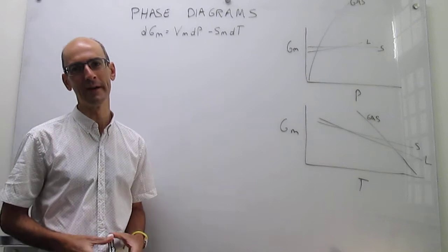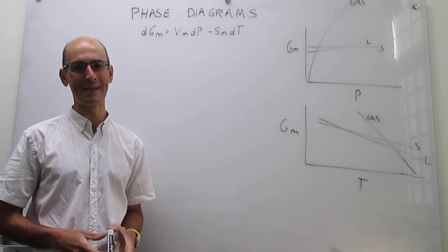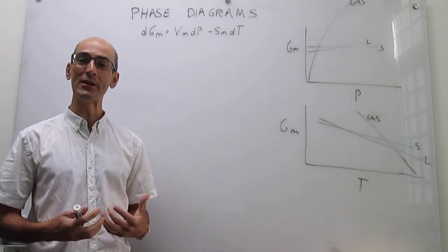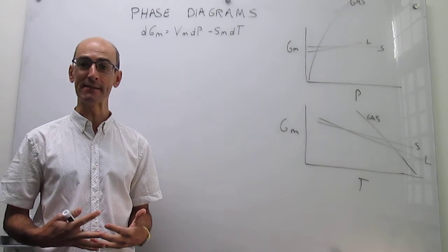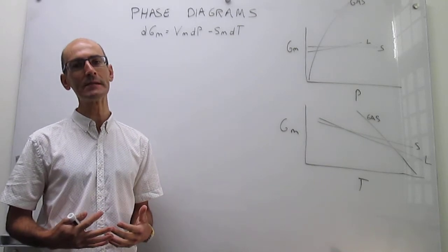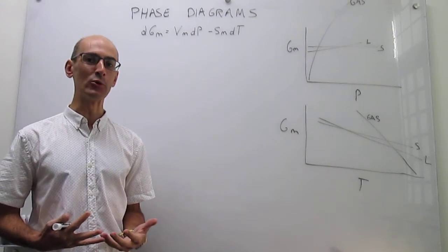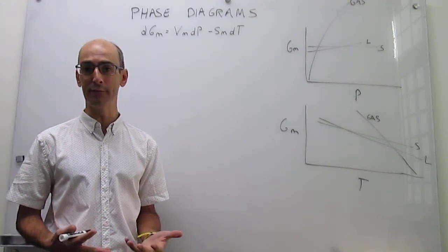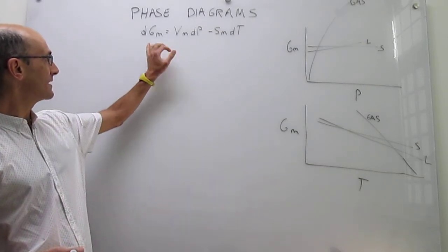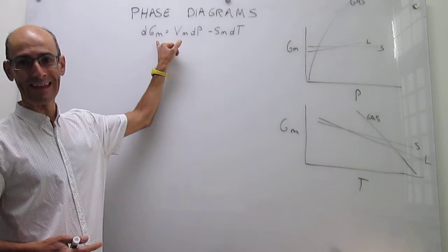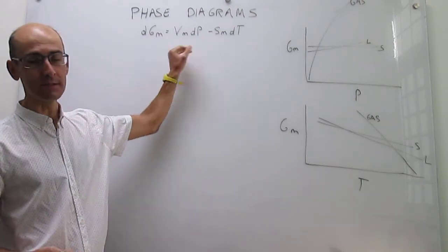In this video, we provide a brief introduction to phase diagrams of pure substances. The starting point is the knowledge acquired in the last few videos, in which we have seen how the molar Gibbs energy is a thermodynamic variable that controls the stability of phases in pure substances. The overall equation that tells you how the molar Gibbs energy of any phase varies with conditions of pressure and temperature is this one.